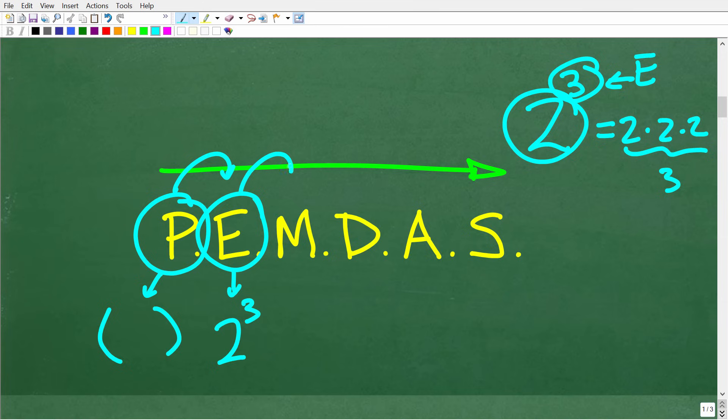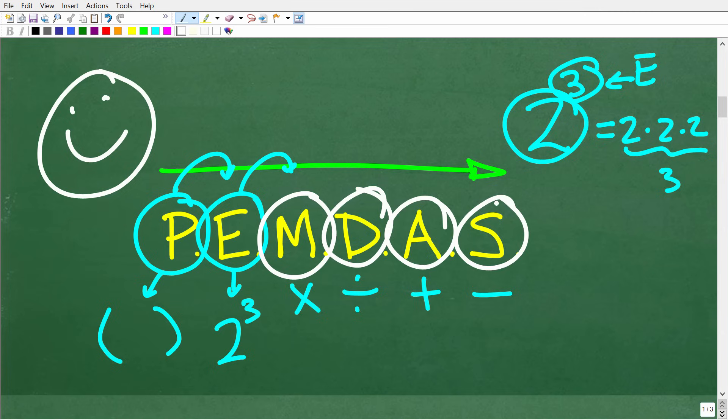All right, so the next thing is M, D, A, and S. So let me tell you what these letters stand for. So M stands for multiplication, D stands for division, A stands for addition, and S stands for subtraction. Now, a lot of people are going to be, all right, Mr. E2Math, I know what comes next. We're going to do multiplication, and then after all multiplication is done, we're going to move on to division, and then addition and subtraction. And that's pretty logical. Matter of fact, that's how most people would interpret this PEMDAS little acronym. But actually, that is wrong.